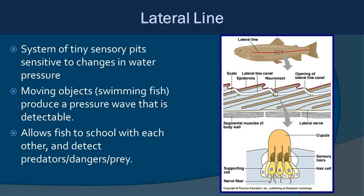Now we'll look at the lateral line — a series of tiny sensory pits along the side of the fish. In some fish like the snook you can definitely see the line; in others you have to look more closely. The neuromasts inside these sensory pits sense changes in water pressure. So if there's a moving object nearby, the fish will pick up the vibrations of pressure changes caused by that object. This allows fish to orient themselves during schooling or shoaling activities, and also to detect predators, dangers, and prey items using the lateral line.